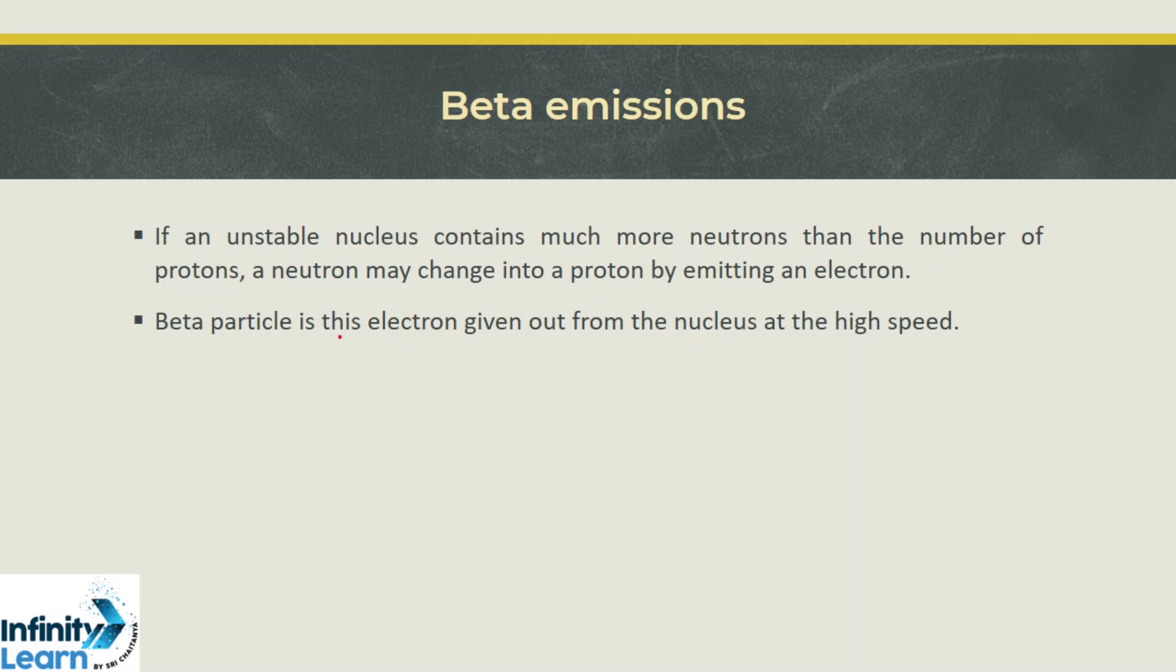A neutron changes to a proton with one positive charge, plus there is emission of a beta particle which is a high-speed electron with negative charge. For the equation to be complete, there is also emission of anti-neutrino particles, which is energy emitted when a neutron is converted into a proton.